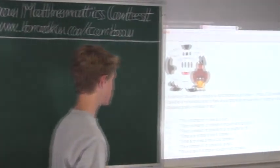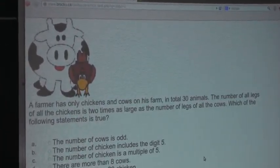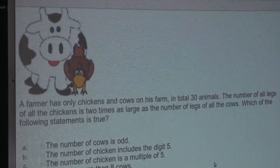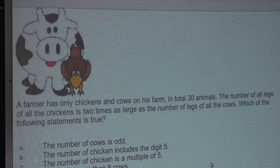So the question is, a farmer has only chickens and cows on his farm, in total 30 animals. The number of all legs of all the chickens is two times as large as the number of legs of all the cows. Which of the following statements is true?